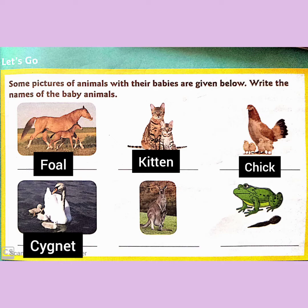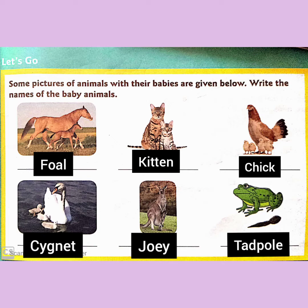Next, kangaroo — its baby is always found in its pouch and is called a joey. And this one is frog — we learned about its baby in our earlier chapter. It is called a tadpole.